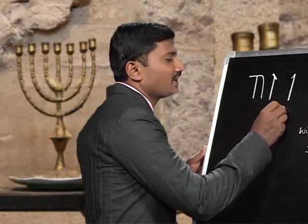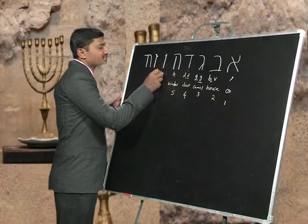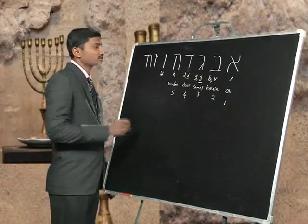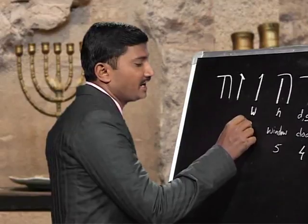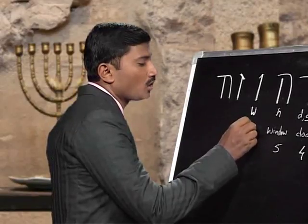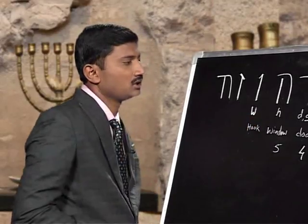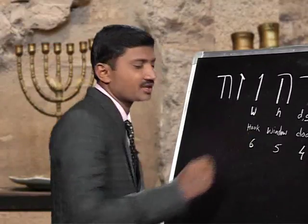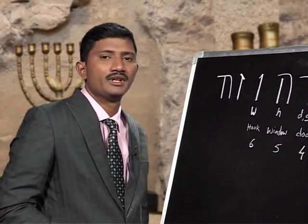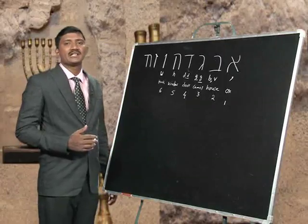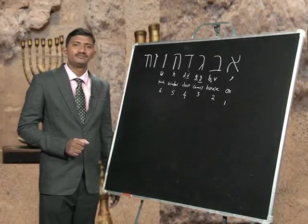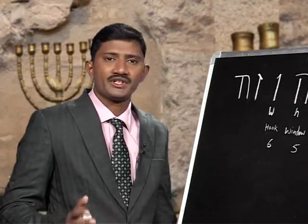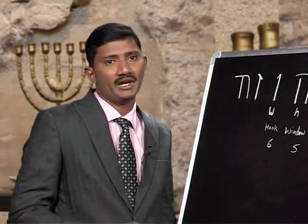The next letter we learned is Vav, which is the sound W. The picture we get is a hook. Its numerical value is number 6, and we know that 6 is the number of creation because God created everything in 6 days.